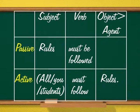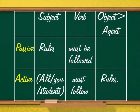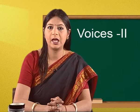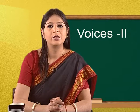Passive: 'Rules must be followed' — rules is subject, must be followed is verb, there is no object or agent. When we write the same sentence in active voice, we will add all, you, or students before the sentence as the new subject, with must follow as verb and rules as object. You have seen how verbs can be changed from active to passive and from passive to active.